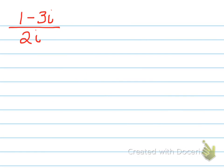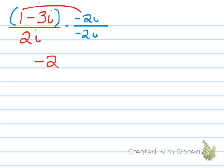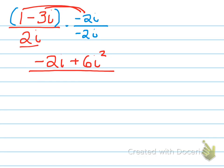Let's do one more example. If I have a positive 2i in the denominator, I'm going to multiply by the complex conjugate. Since it doesn't have a real part, we're just going to multiply by negative 2i. This example is a little easier because we only have to distribute one number instead of two. So 1 times negative 2i is negative 2i, and then negative 3i times negative 2i gives positive 6i squared all over 2i times negative 2i, which is 4i squared.